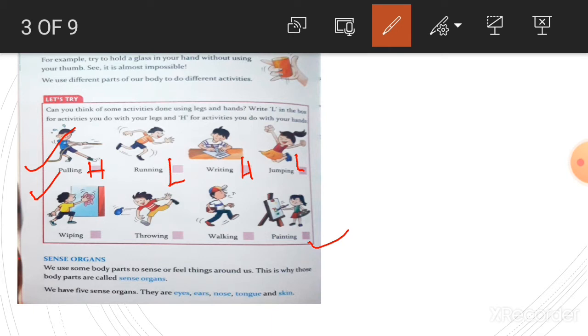Next, sense organs. We use some body parts to sense or feel things around us. This is why these body parts are called sense organs. We have five sense organs: eyes, ears, nose, tongue, and skin. We use sense organs to feel different things around us.